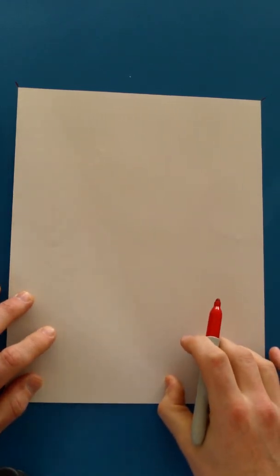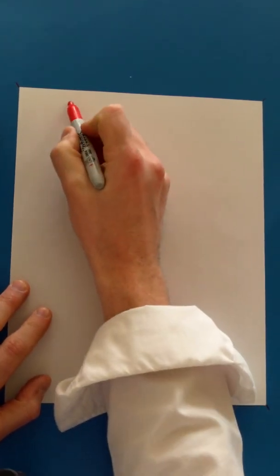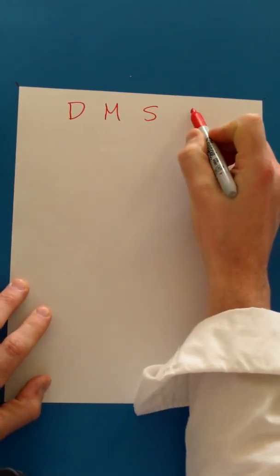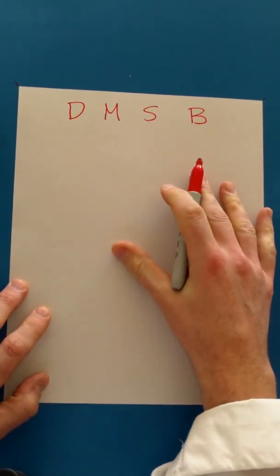Hi grade threes. Today we're going to work on a long division strategy and I'm going to start off by putting D, M, S, and B at the top of my page.